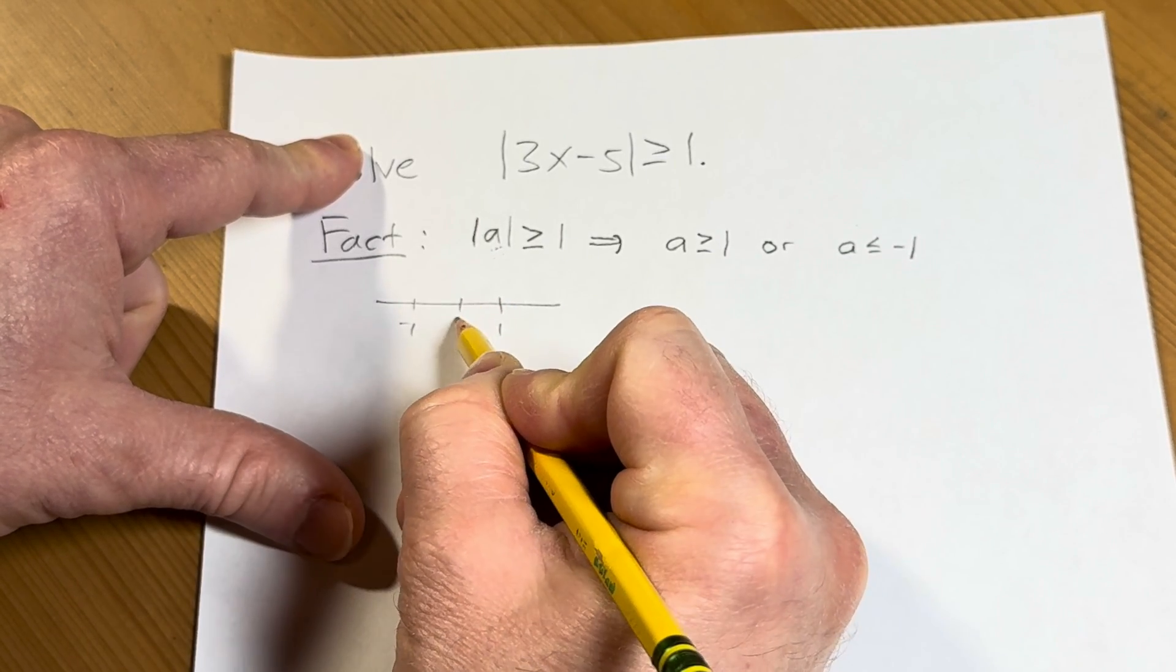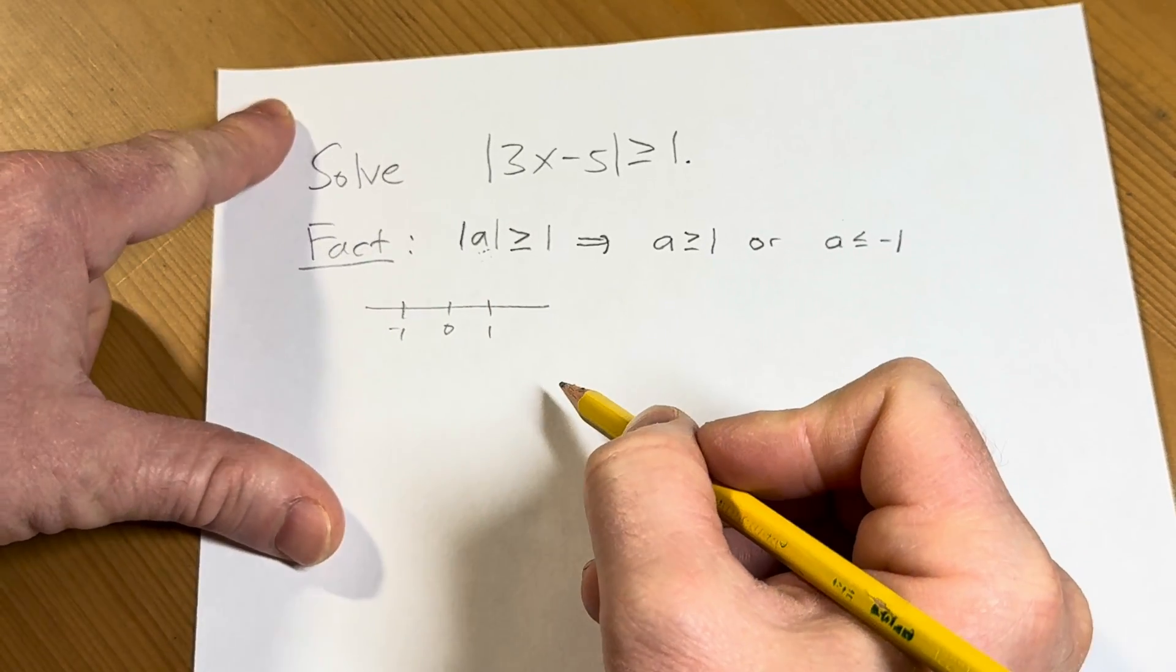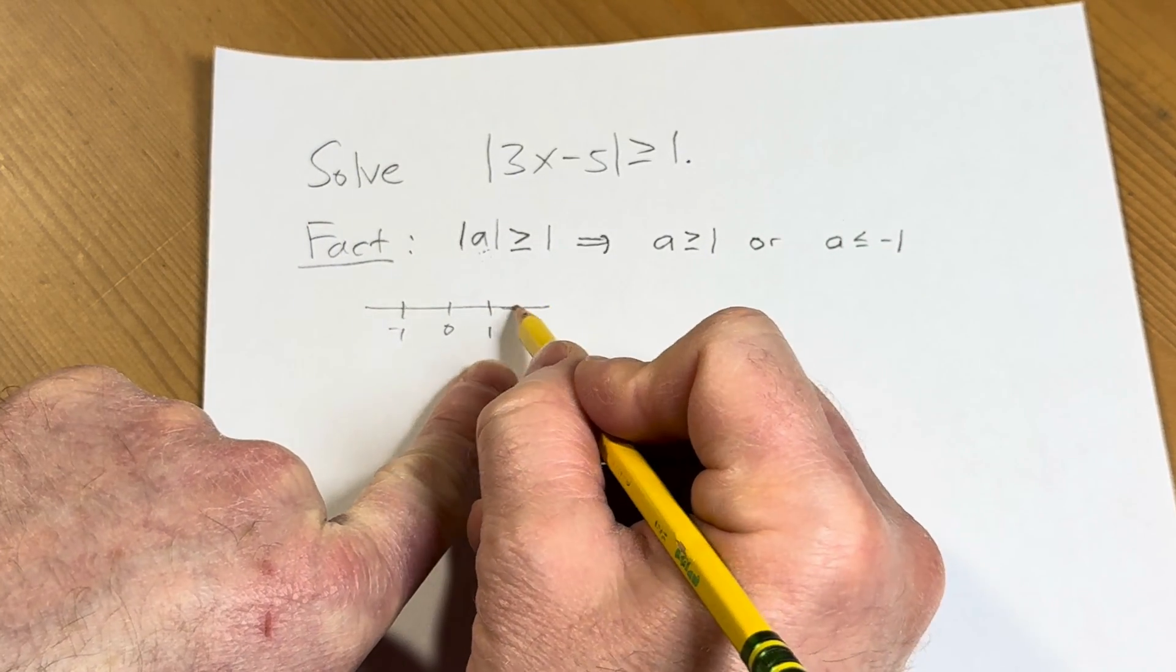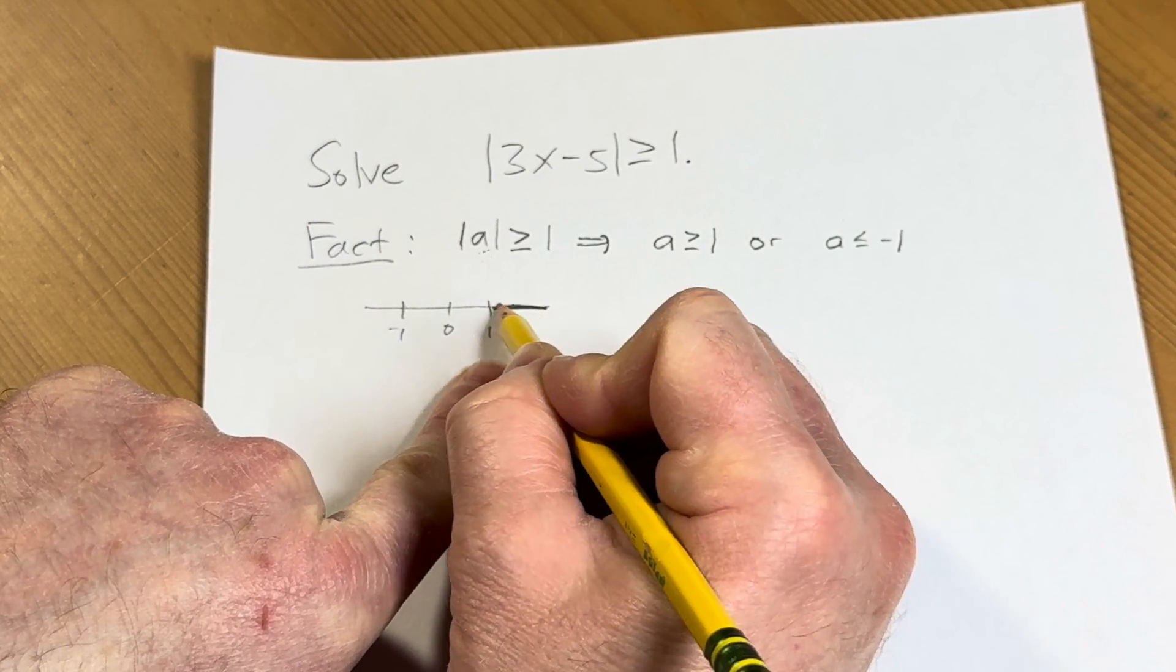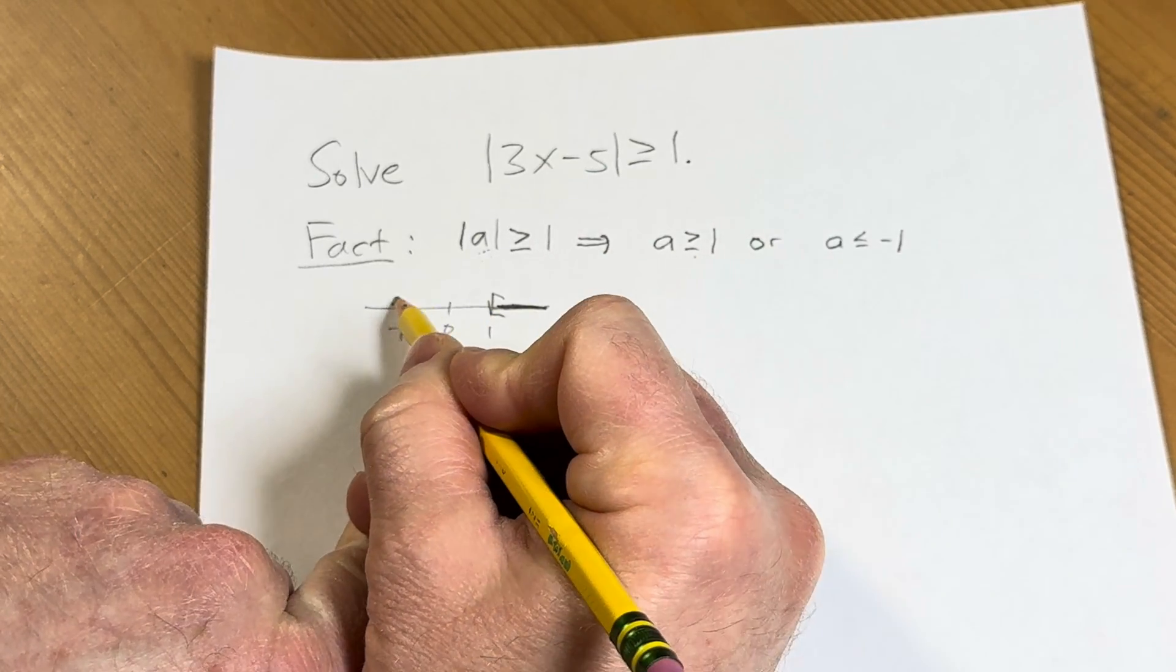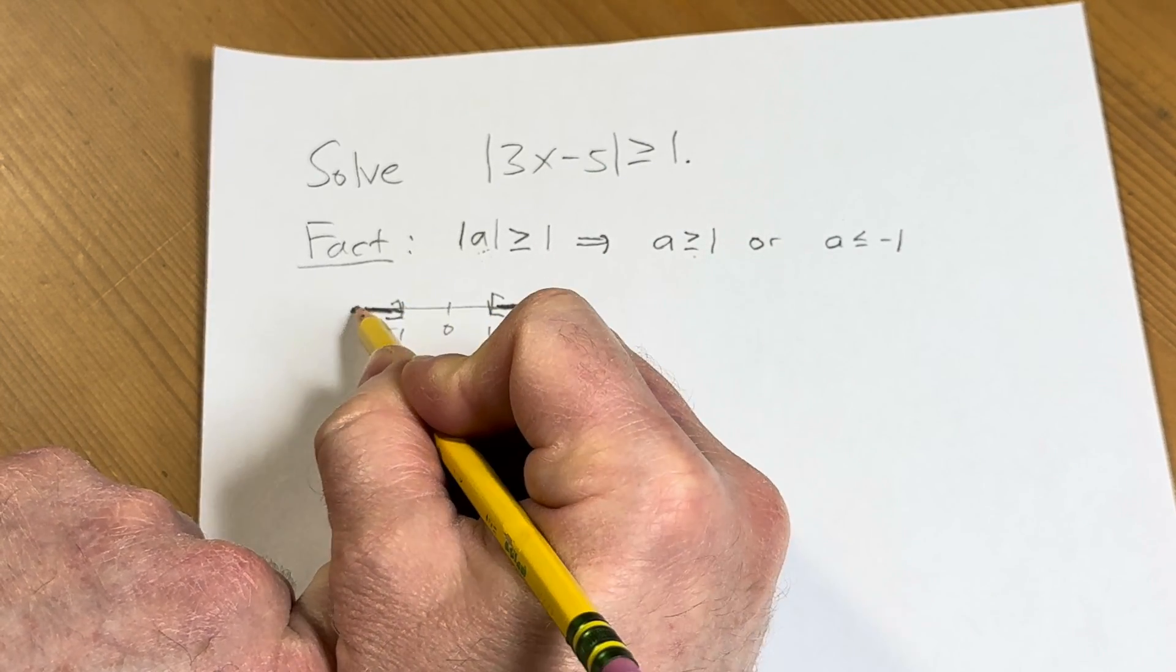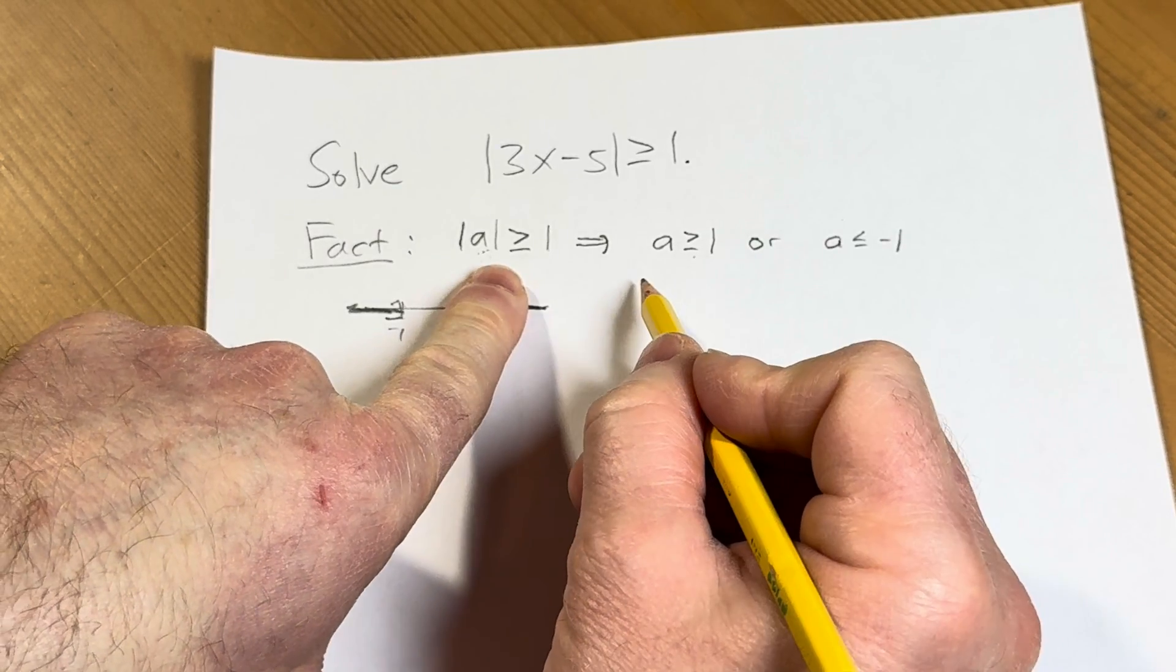this is negative 1, this is 0. So where is a? Well, it has to be over here, greater than or equal to 1, or it has to be over here, less than or equal to negative 1. So that's the idea. So when you're doing a problem like this, you want to use this thinking.